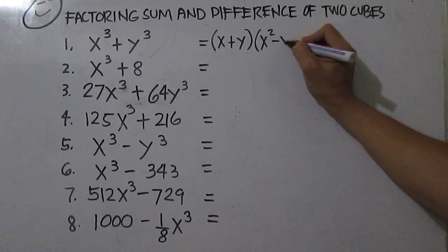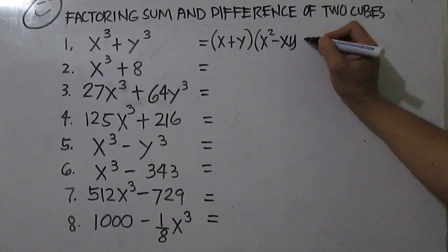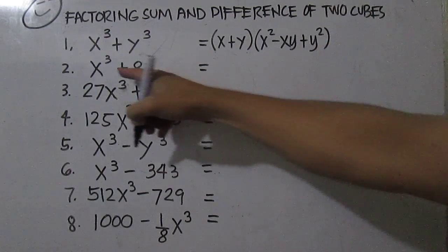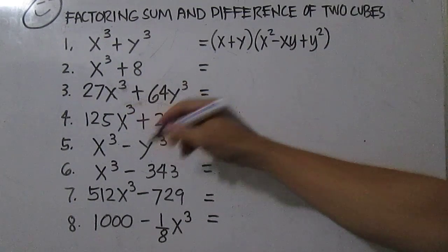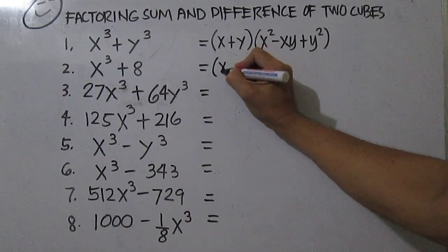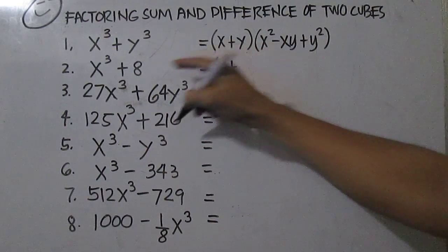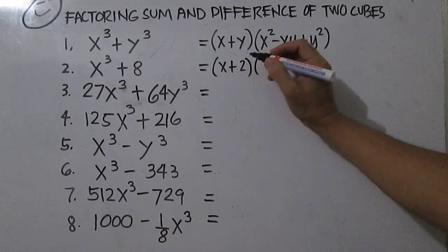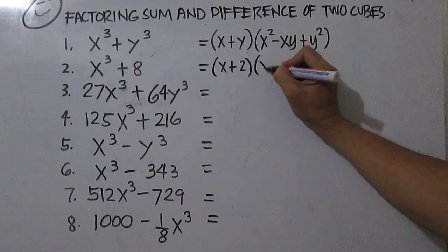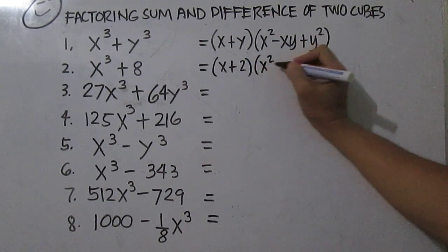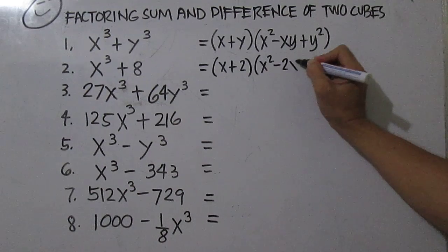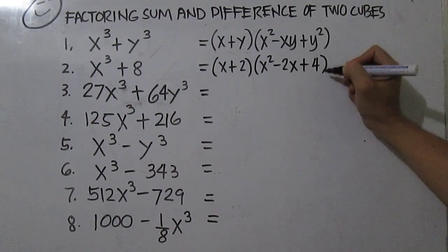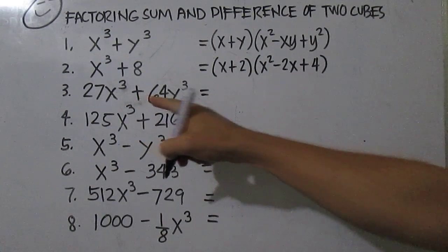Then you square the second term — y times y is y squared. For x cubed plus 8: the cube root of x cubed is x, plus the cube root of 8 is 2. From this factor, you square the first term, then write the opposite of the product of the first and second term, then square the second term. For 27x cubed, the cube root is 3x.